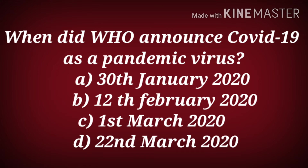When did the World Health Organization announce COVID-19 as a pandemic? Is it 30th January 2020, 12th February 2020, 1st March 2020, or 22nd March 2020? The correct answer is 12th February 2020.